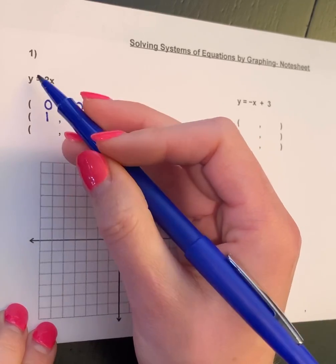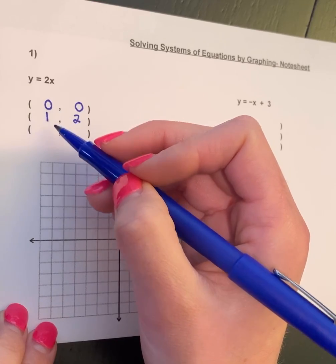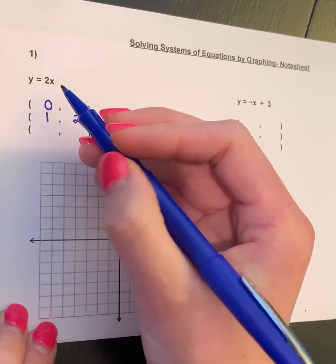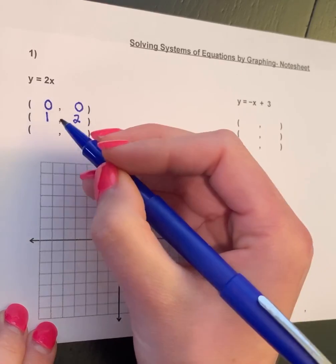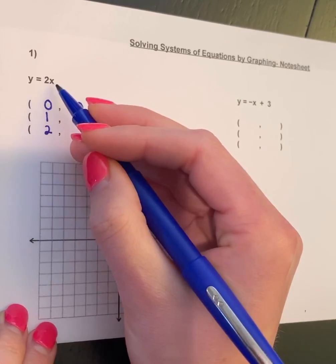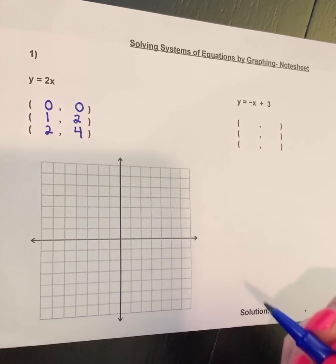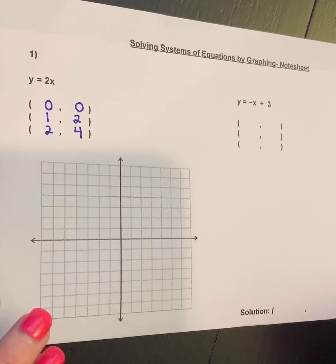If I put 2 in for x, I get 2 times 2, so I get 4. Now we really only need two points in order to draw a straight line, but I just like to do a couple more just to make sure that I did it correctly.